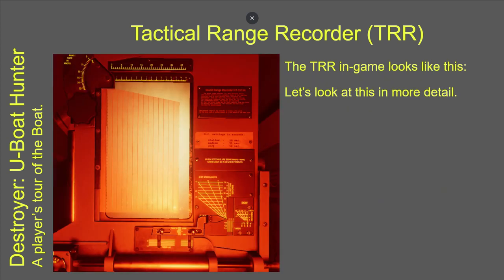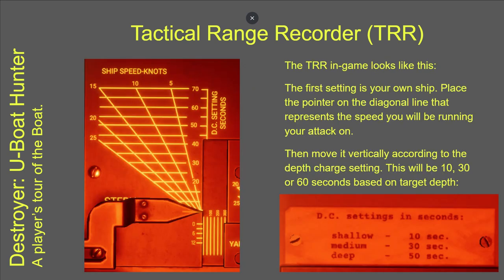This is the screenshot from the game and we'll look at this in a little more detail now. In the bottom right there, we have a close-up. This is the index — what you would do is move the little needle to your target ship's speed, in other words how fast you are moving, what you want to aim for when you're going to do your depth charge run. Then you would want to set the vertical axis to the depth charge setting. At the moment we have only three settings: shallow, medium, and deep — so you would set it to 10, 30, or 60.